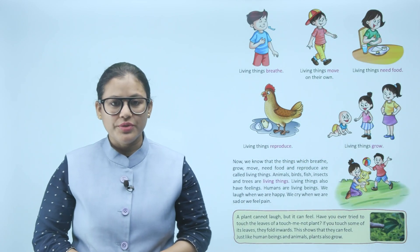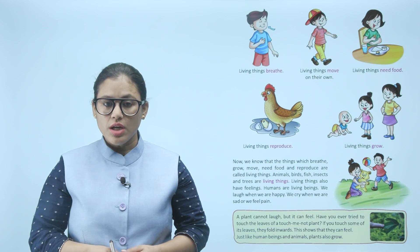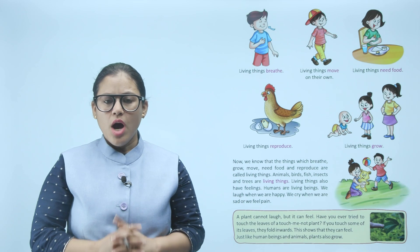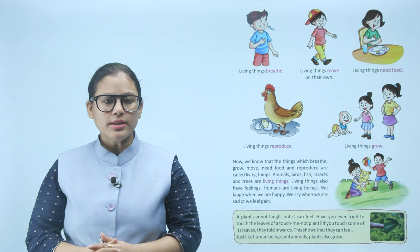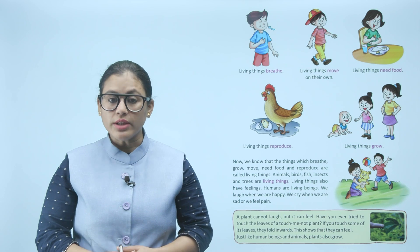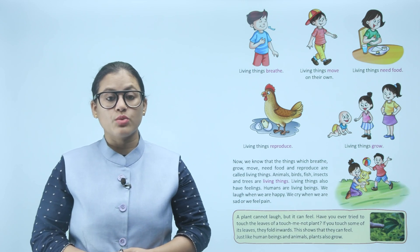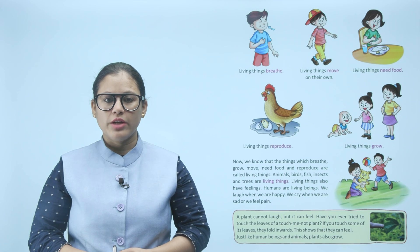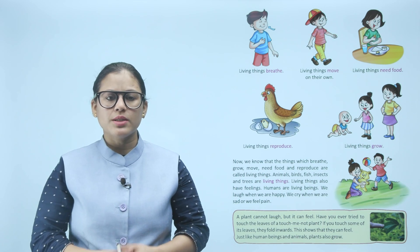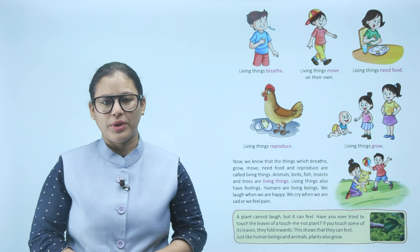Living things breathe, move on their own, need food, reproduce, and grow. Things which breathe, grow, move, need food, and reproduce are called living things. Animals, birds, fish, insects, and trees are living things. Living things also have feelings — humans laugh when happy and cry when sad or in pain.